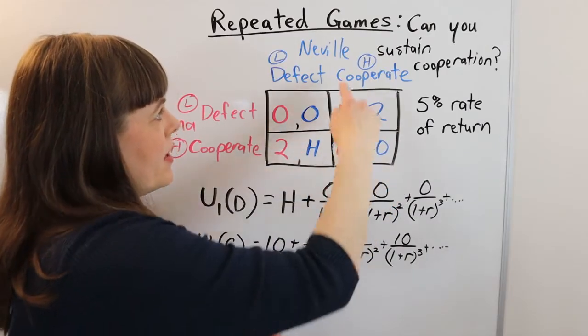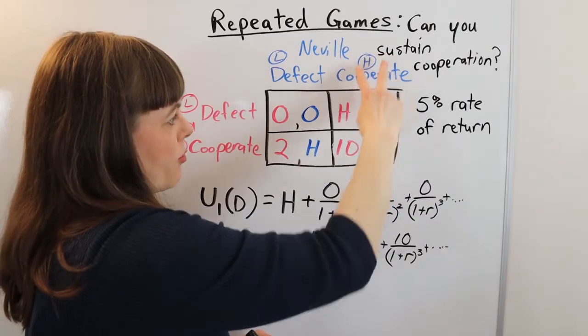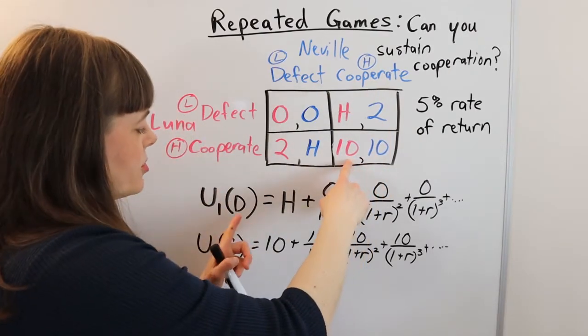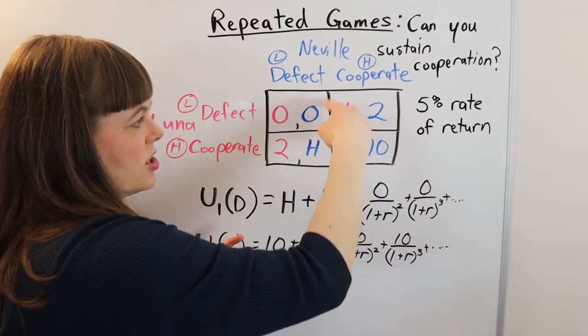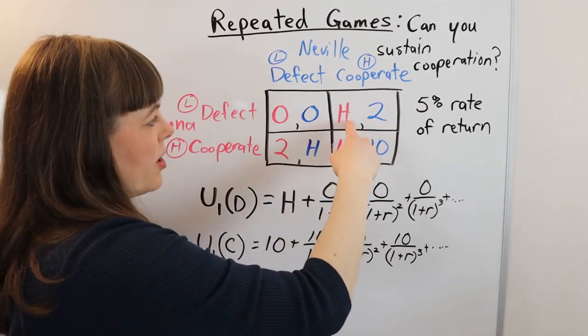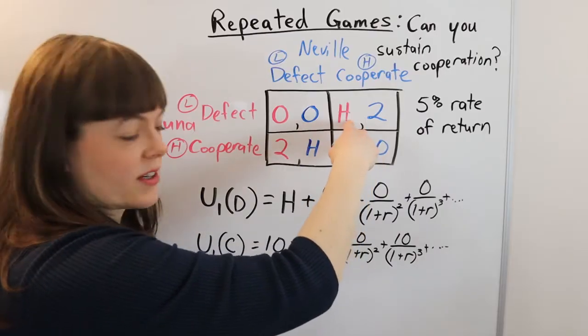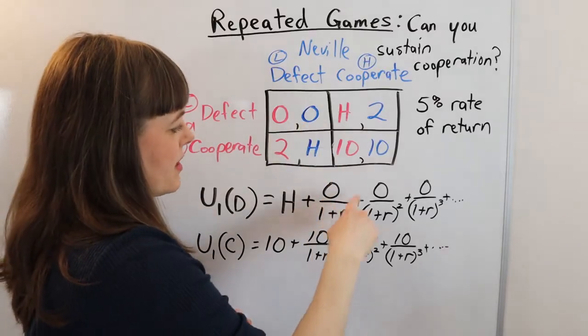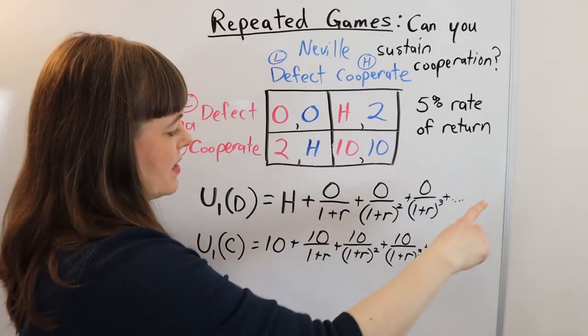That's the question we're asking. And we see, okay, if Neville has chosen to cooperate, so we're in this column and Luna defects the first round, so she chooses H. She gets that huge windfall H. Then we know the next round, he's never going to cooperate again. So we're going to be in this defect, defect box for the rest of eternity. And that's zero.